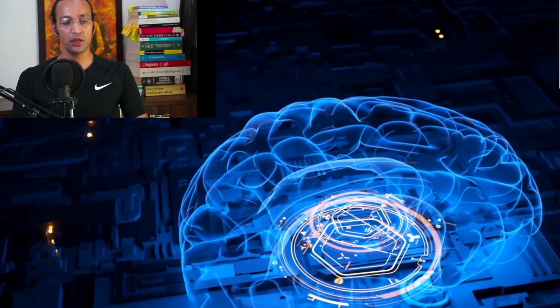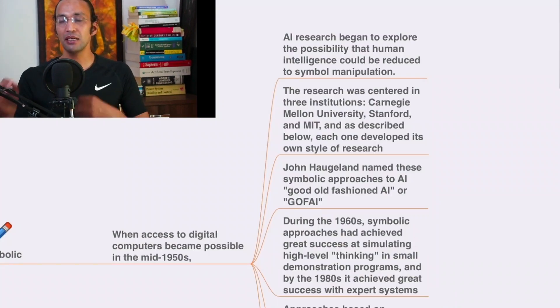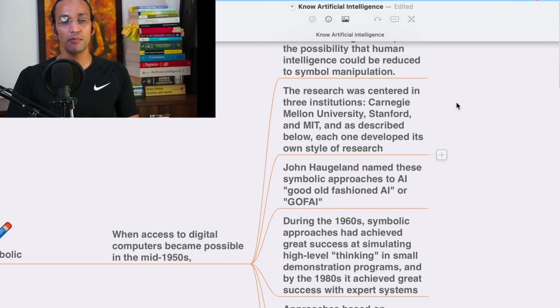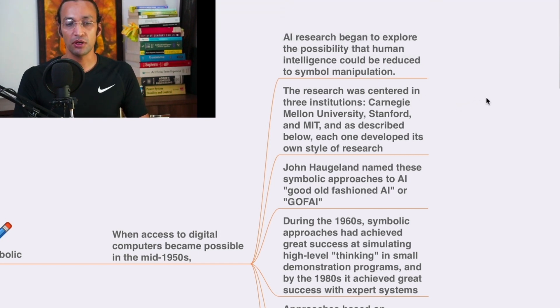So when access to digital computers became possible in 1950, AI research began to explore the possibilities that human intelligence could reduce the symbolic manipulation.